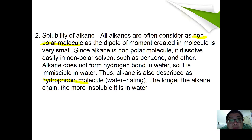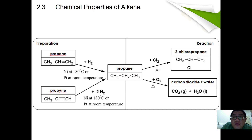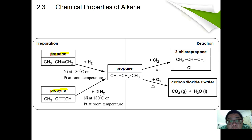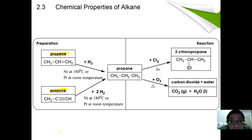That covers the physical properties of alkanes. Now let's look at the chemical properties of alkanes. Here is a mind map of chemical properties of alkanes in terms of preparations and reactions. An alkane can be prepared from alkene and also alkyne via a hydrogenation reaction. There are definitely more ways to prepare alkanes, but these two are from different compounds, so we are stressing on those.